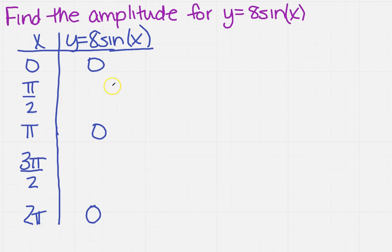We know that pi over 2 is 1, and 1 times 8 is 8. And this one's negative 1, and negative 1 times 8 is going to be negative 8.